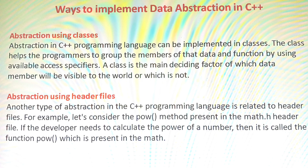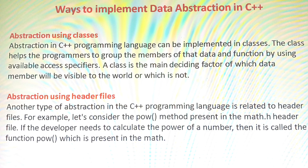What are the statements required to execute the power method? They are all present in the math.h header file. We just write the statement 'power of the number' and we get the result, but we don't need to know what statements are executed inside that function. That is included in the header file math.h. That is the second type of abstraction - abstraction using header files. So the two ways to implement data abstraction in C++ are abstraction using classes and abstraction using header files.